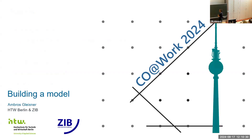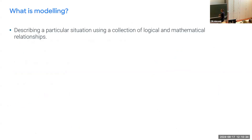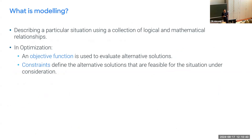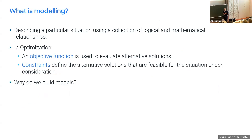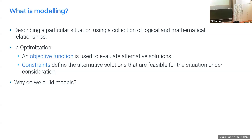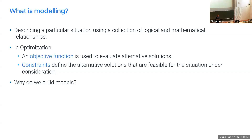Building a model: modeling is describing a particular situation using a collection of logical and mathematical relationships. In optimization, that means we need an objective function to evaluate the quality of solutions, and constraints to define which solutions are feasible. Now I want to ask you — why do we build models? What's the great thing about models? I have a few points here, but I think you probably have opinions or experience with this. What have you used models for, and why are models better than reality?